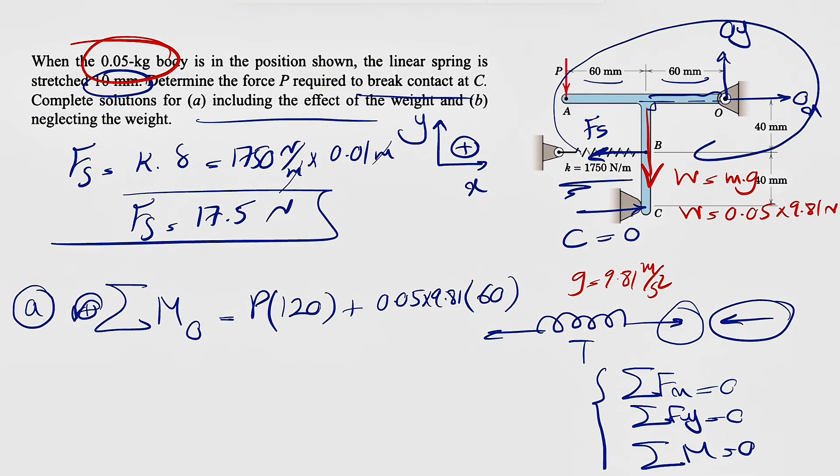The last moment is from the spring, which is clockwise, so negative 17.5 times the vertical distance 40 mm. That's everything for the moment equation.